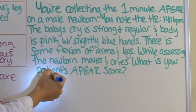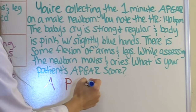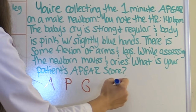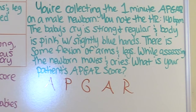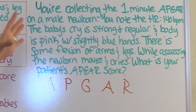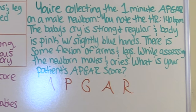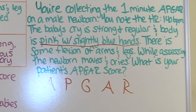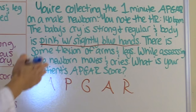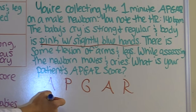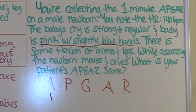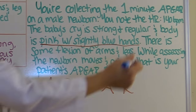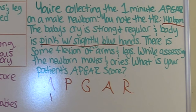To solve this, I like to write out APGAR and tally the score underneath each letter, then add it up — so you're looking for five things. A for appearance: the newborn is pink with slightly blue hands, so that is a score of one — that's acrocyanosis. P for pulse: the pulse was 140 beats per minute, which is greater than 100, so we give it two points.